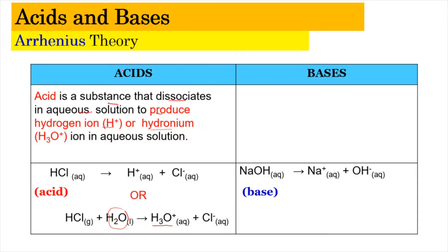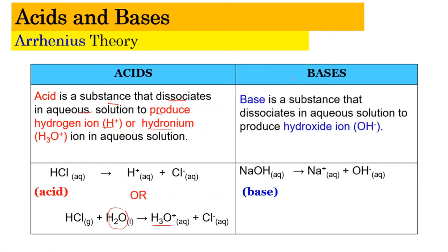Since acids produce H⁺, bases produce the hydroxide ion when dissociated in aqueous solution. For example, sodium hydroxide — when dissociated, it produces Na⁺ aqueous as well as the OH⁻ ion, which is the hydroxide ion. This is the definition of acids and bases according to Arrhenius.